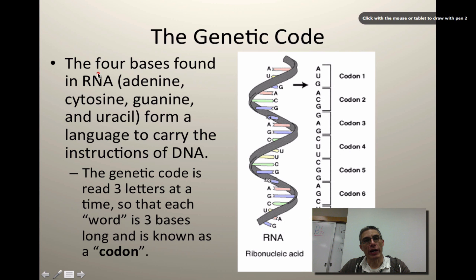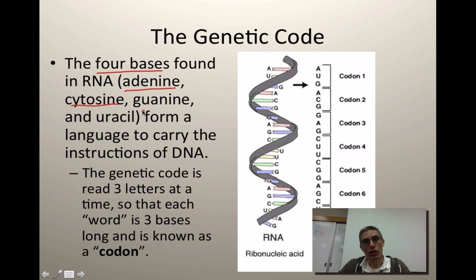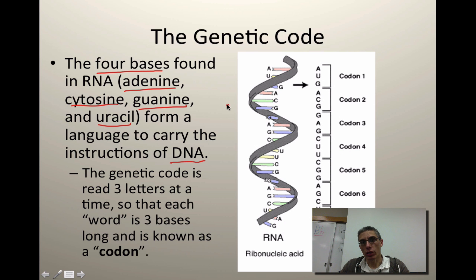Remember when we talked about RNA — there were actually four bases found in RNA, and three of those bases were similar to the DNA we looked at in Chapter 12. The adenine, the cytosine, and the guanine are exactly the same bases you would find in DNA, but the one difference is the uracil. In RNA, there's going to be uracil instead of the thymine found in DNA. What we're going to do with the RNA is basically form a kind of language — the genetic code like a language to carry those instructions from the DNA. We need to develop a method to actually read this information, and normally you will read that genetic code three letters at a time.